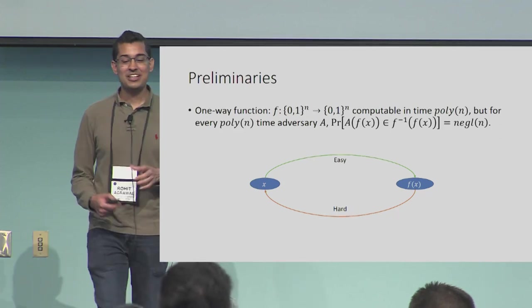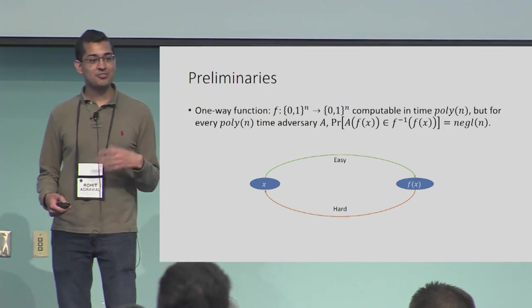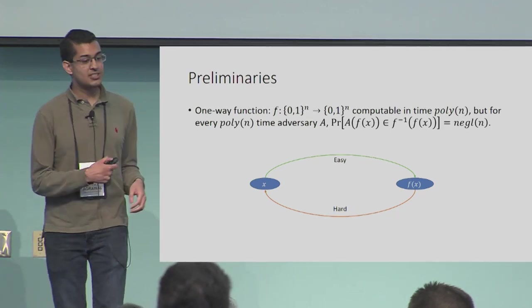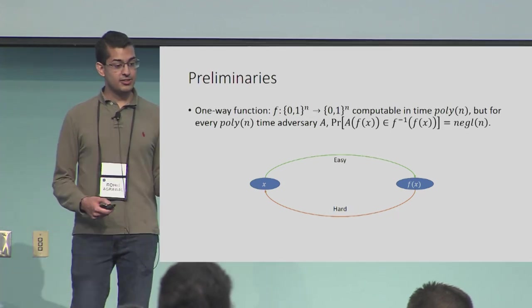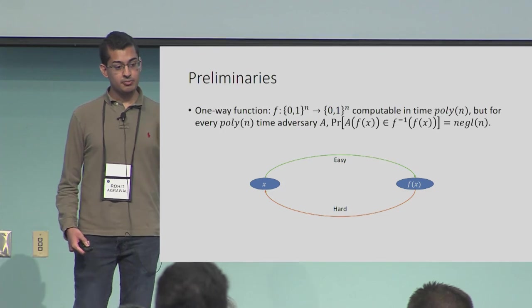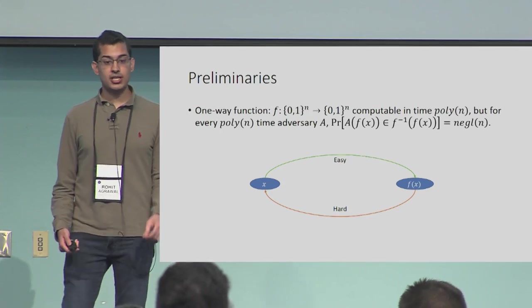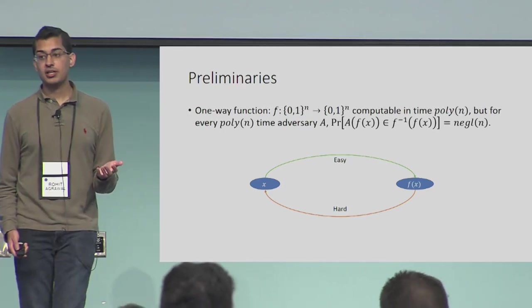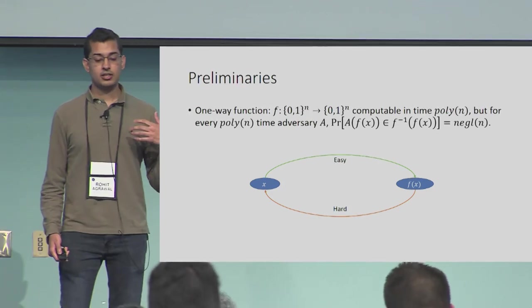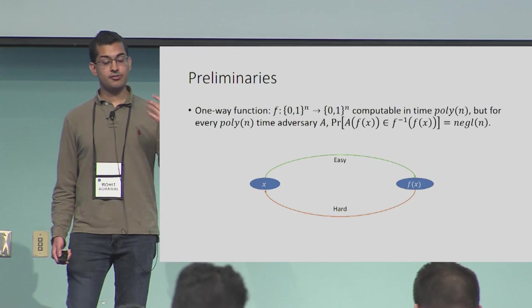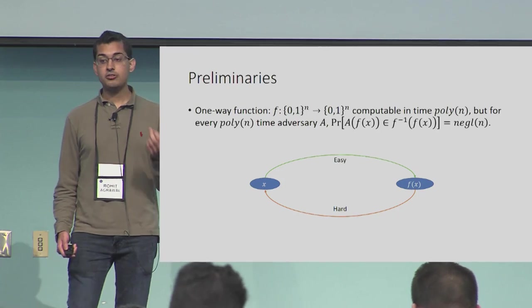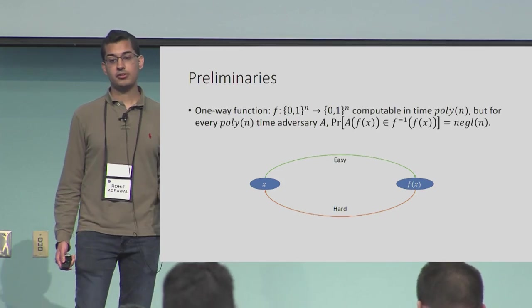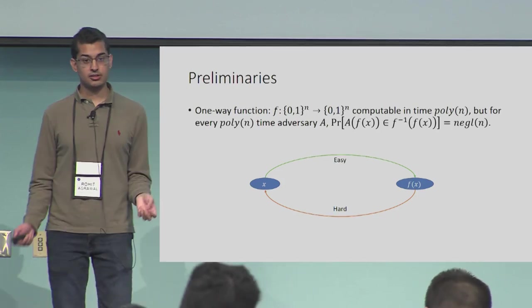Briefly, for notational purposes: a one-way function is a function f computable in polynomial time such that for any polynomial time adversary, the probability of inverting a uniform image of the one-way function is negligible.